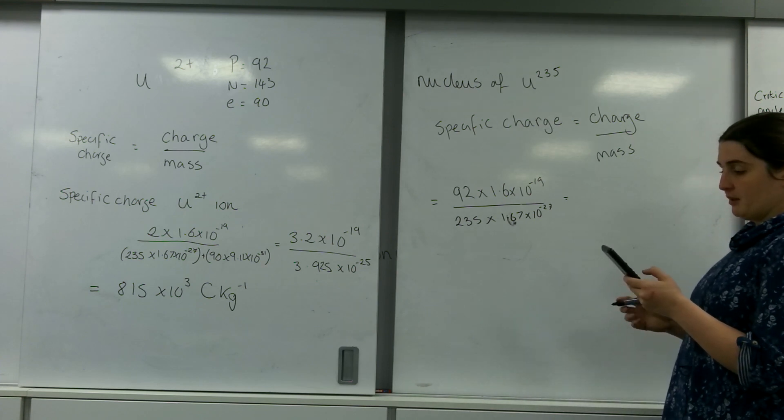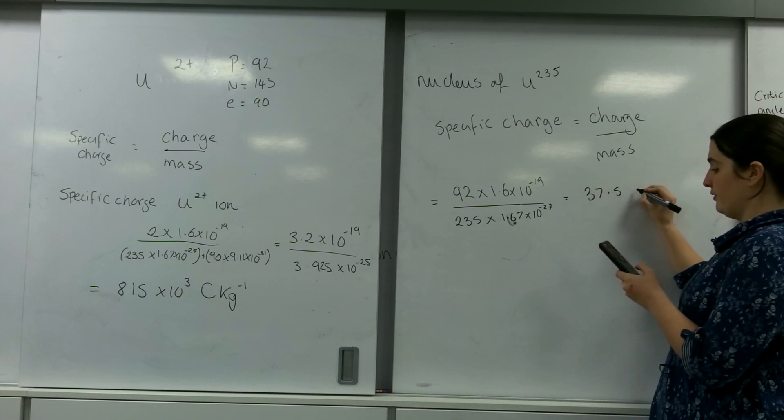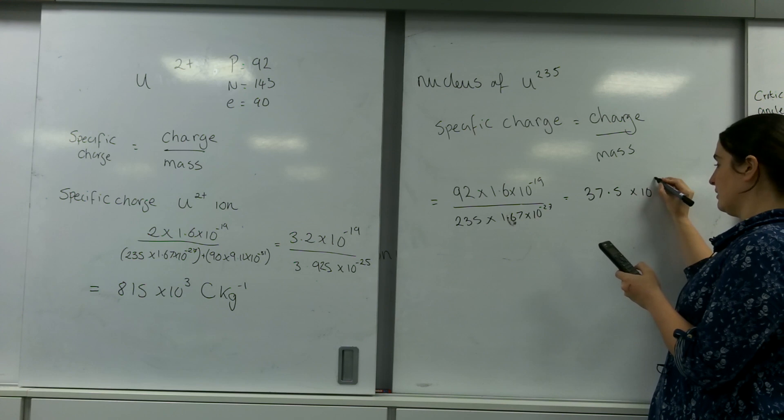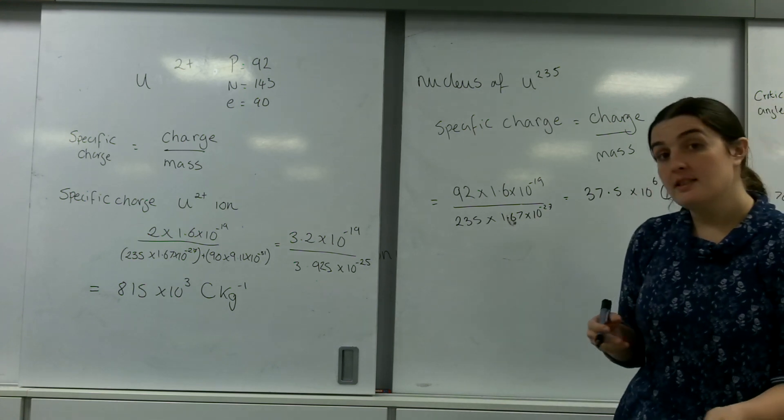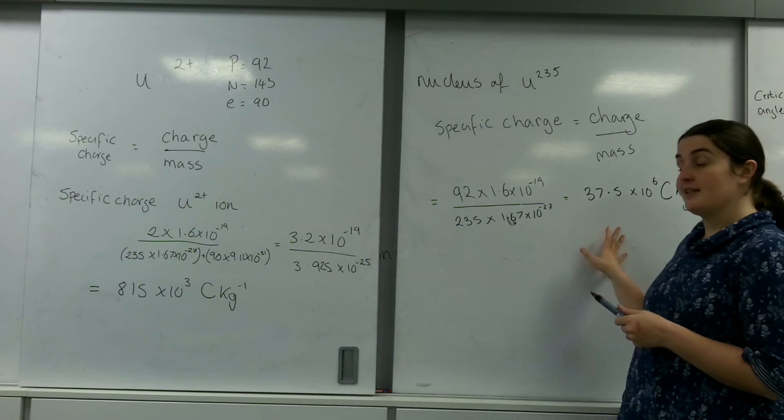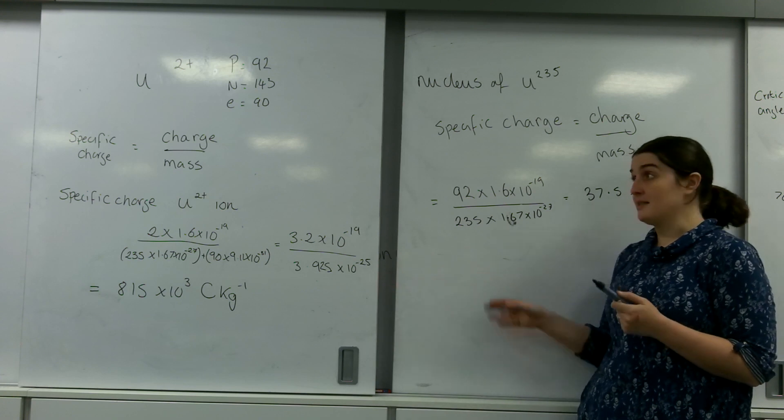And that gives me a number of 37.5 times 10 to the 6 coulombs per kilo. As you can see, this has a much bigger specific charge than this one, because it has a much bigger charge.